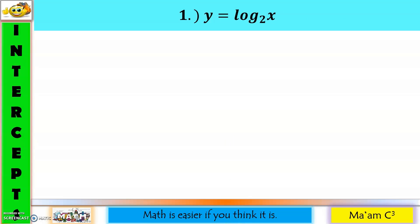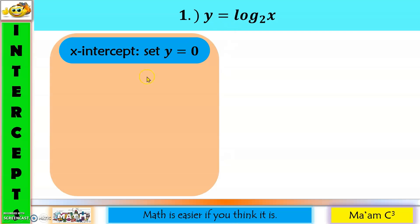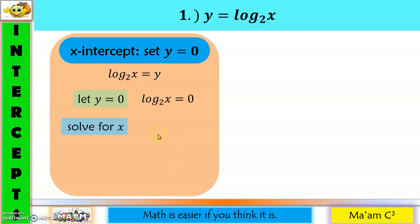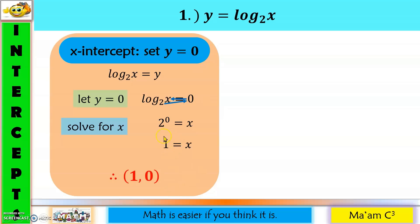Let's have the first example: y is equal to the logarithm of x to the base 2. For the x-intercept, set y equal to zero. Then convert to exponential form: 2 raised to zero equals x. Any number except zero raised to zero is equal to one, so x equals one and y equals zero. Therefore, the x-intercept is (1, 0). The value 1 is also called the zero of the function.